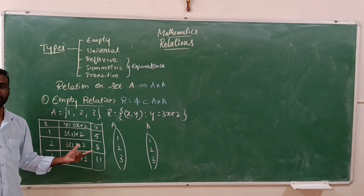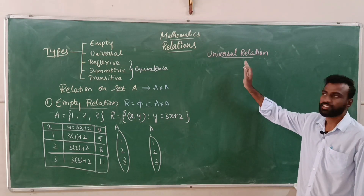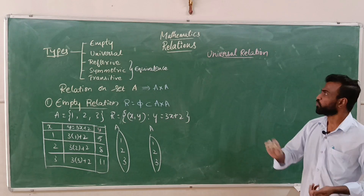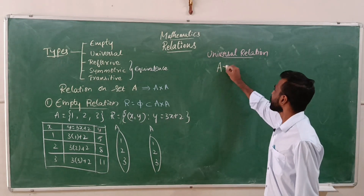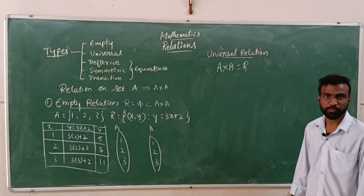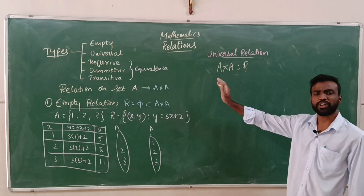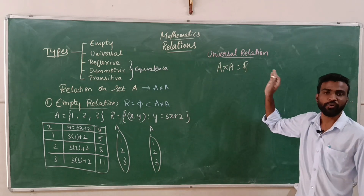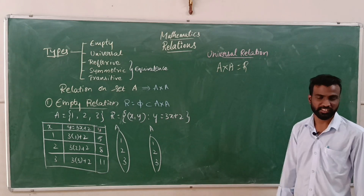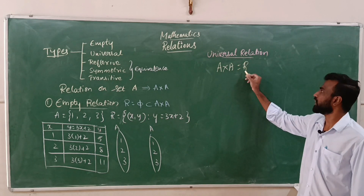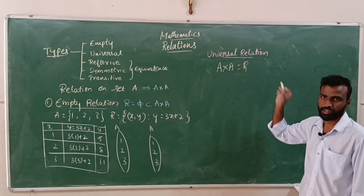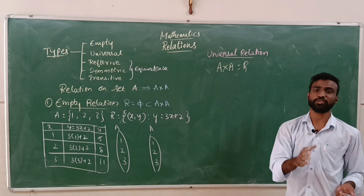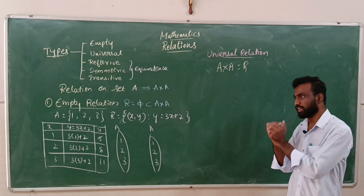With regard to universal relation: a relation R on set A is called universal relation only when all the elements of A cross A are present in R. That means every element of A cross A should be present in R. The mathematical definition is R is equal to A cross A. Universal relation is nothing but whatever elements you have in the Cartesian product A cross A, all those elements should be present in R.